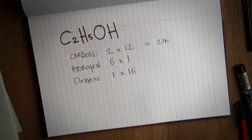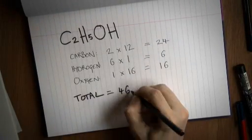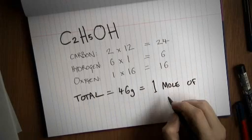So if we tot that lot up, you've got two lots of 12, so that's 24, plus six lots of 1, that's 6, and one lot of oxygen, 16. So that's 46 in total, but 46 what?